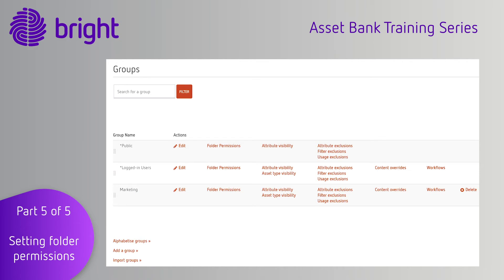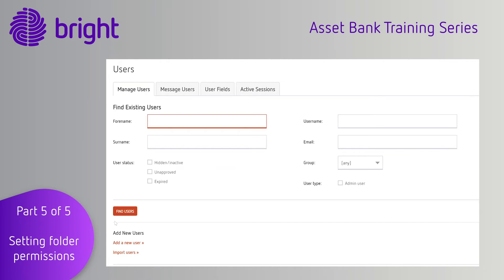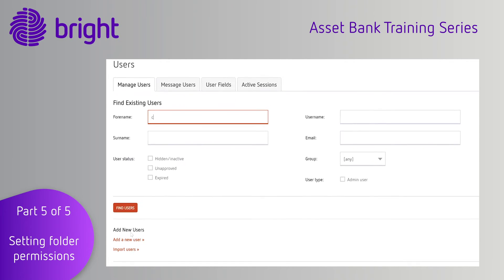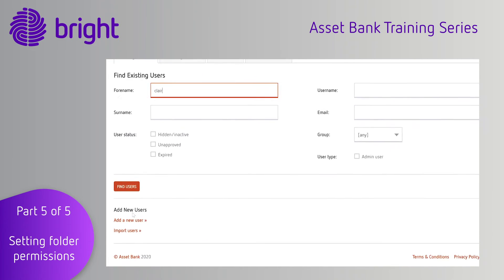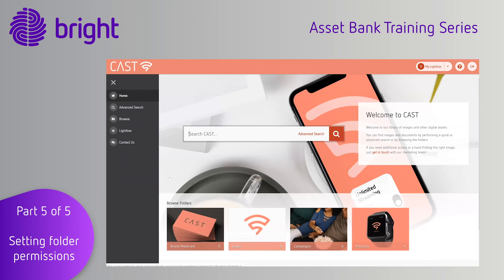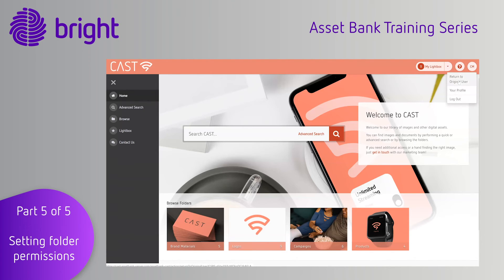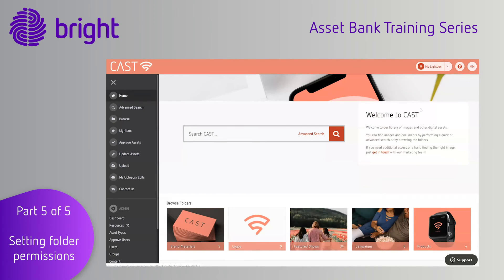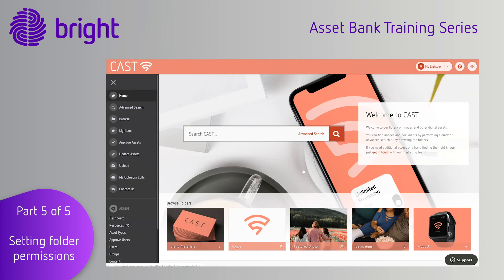You can test exactly what a user can see by finding their account under the Users tab, click More, and then log in as this user. Asset Bank will then mirror their user experience to you, so you can always check that the right people can see the right content.